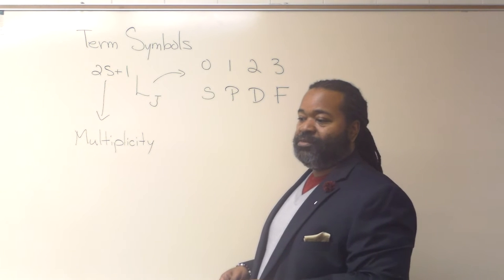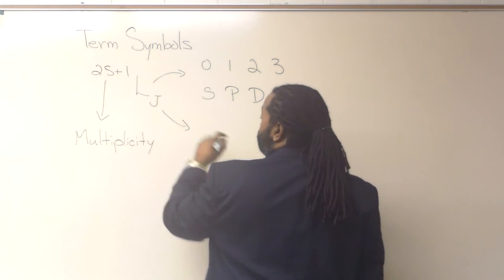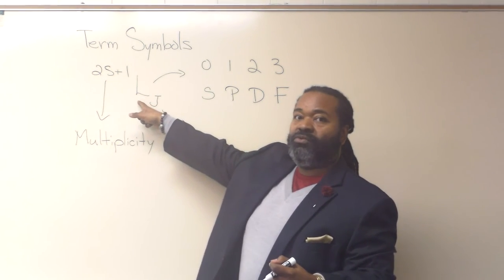Now the value j is determined based on a series of rules governing the total angular momentum that comes from the spin multiplicity and the orbital.